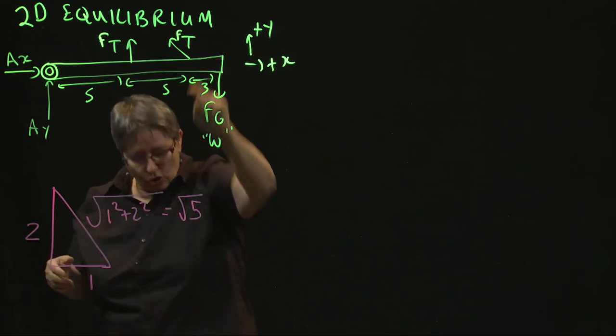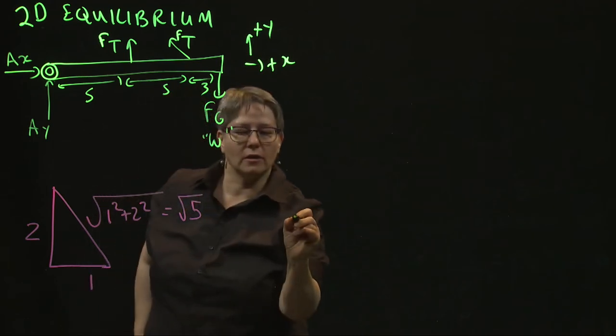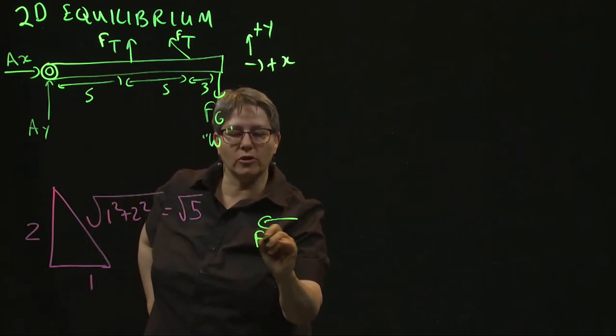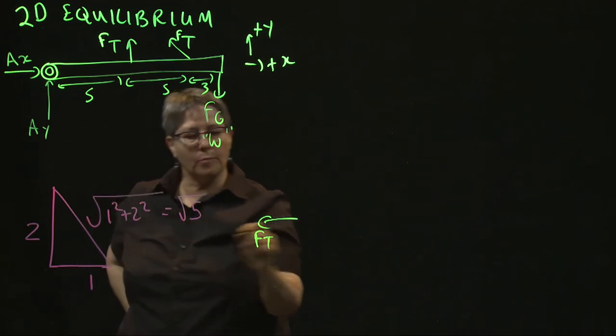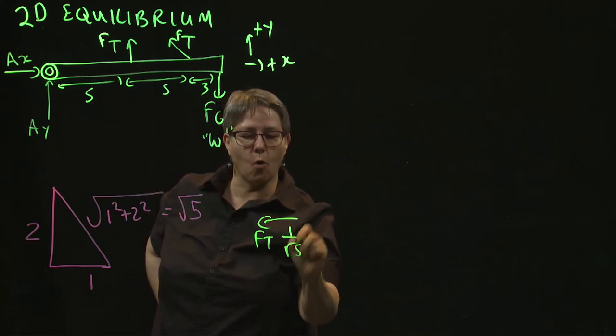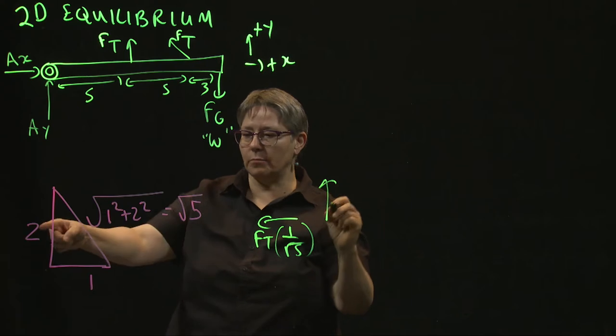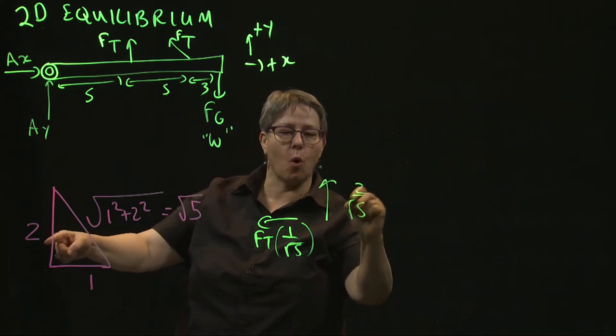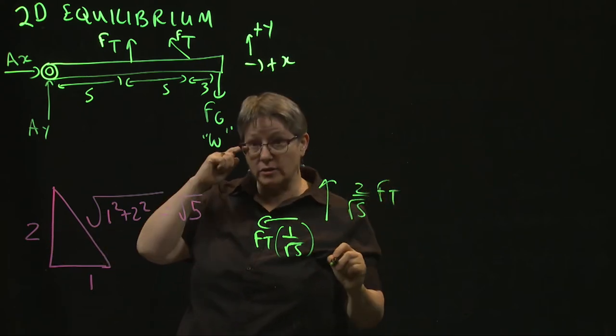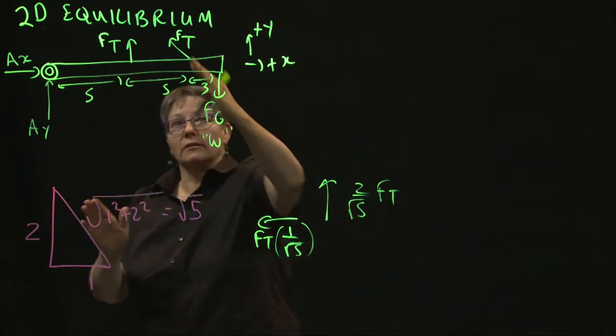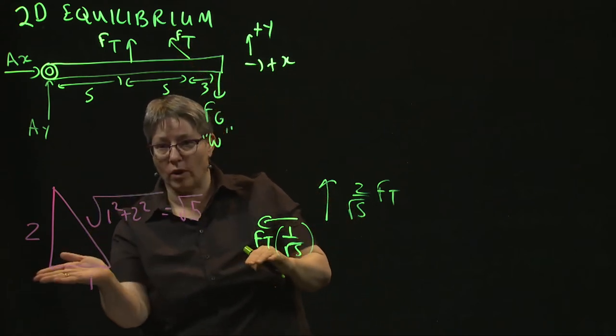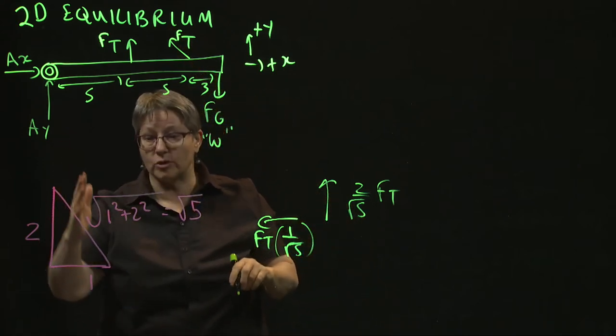But what that means is in terms of this component, this way, so you've got your tension force, this component is one over the square root of five, while this component is two over the square root of five times FT. That's what this means. One divided by square root of five, two divided by square root of five.